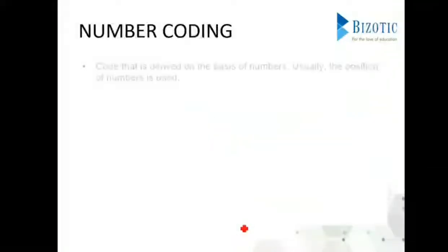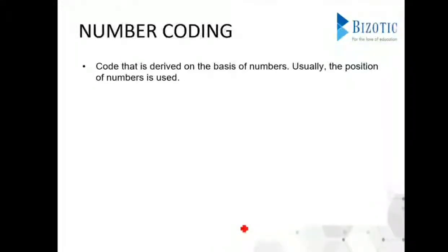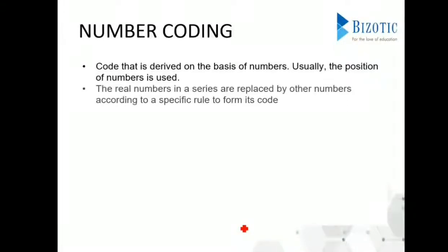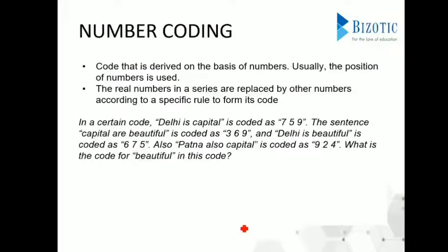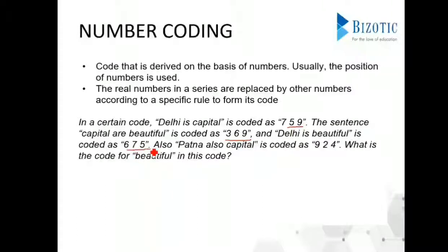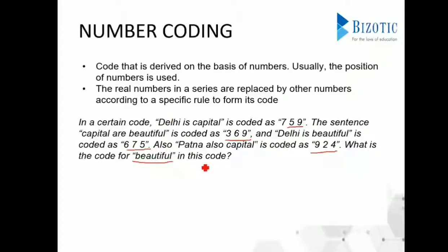Moving on, another type is number coding, which is derived on the basis of numbers where the position of numbers is used. The real numbers in a series are replaced by other numbers according to a specific rule to form its code. For example: 'Delhi's capital' is coded as 759, 'capital are beautiful' is coded as 369, 'Delhi is beautiful' is coded as 3675, and 'capital' is coded as 924 — what is the code for 'beautiful'?